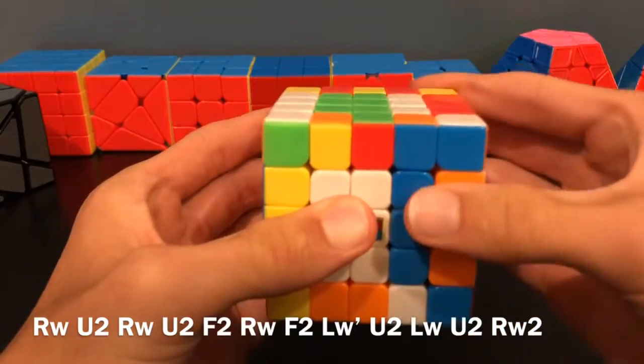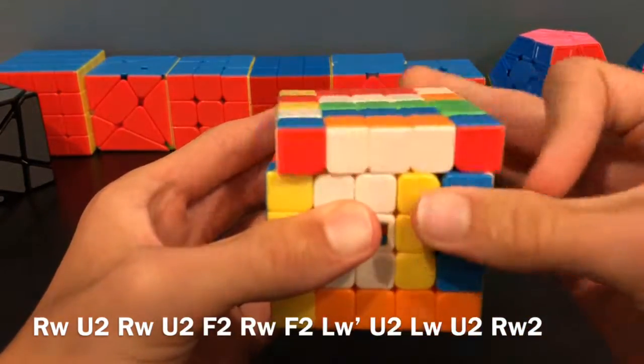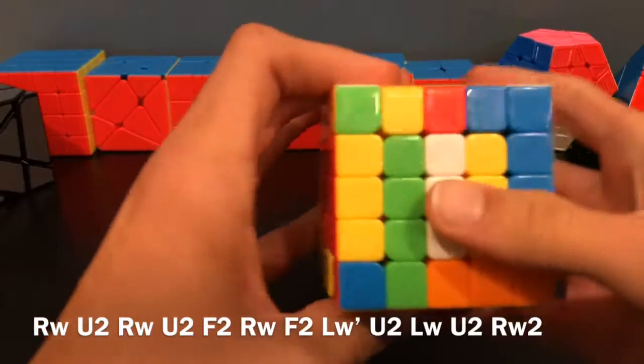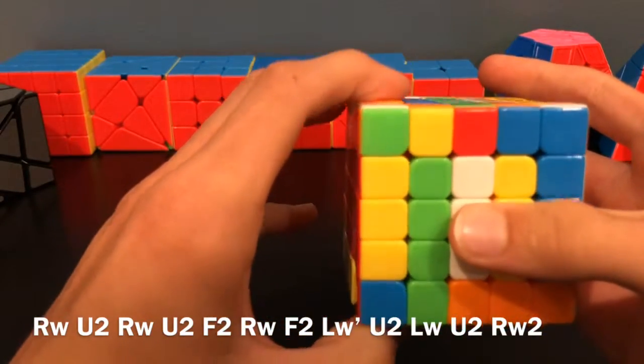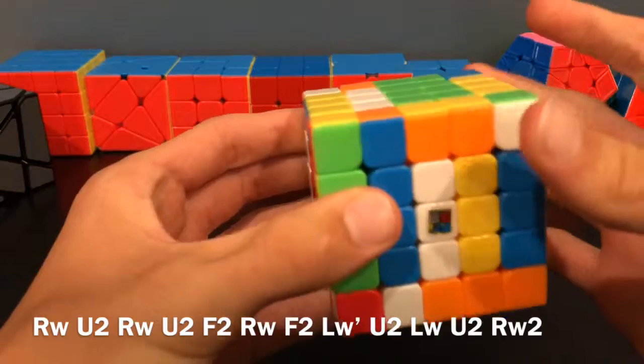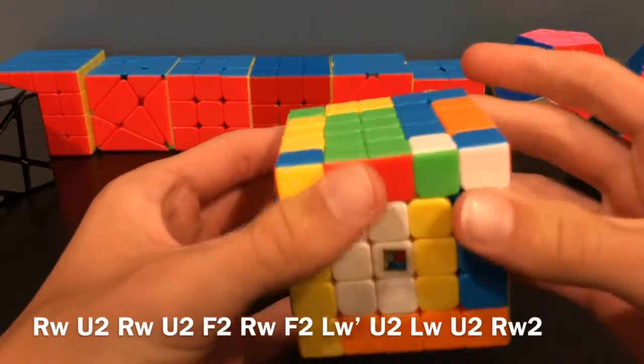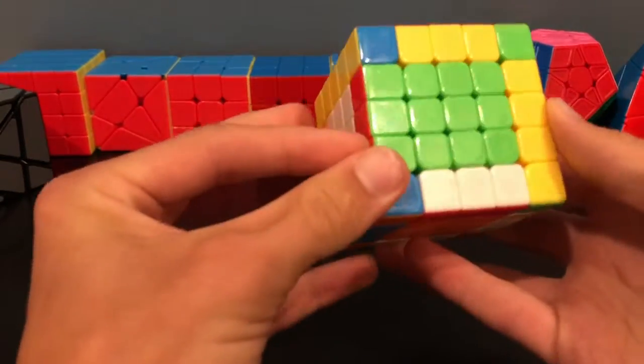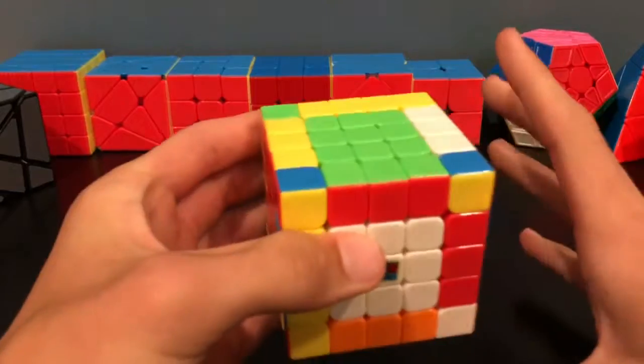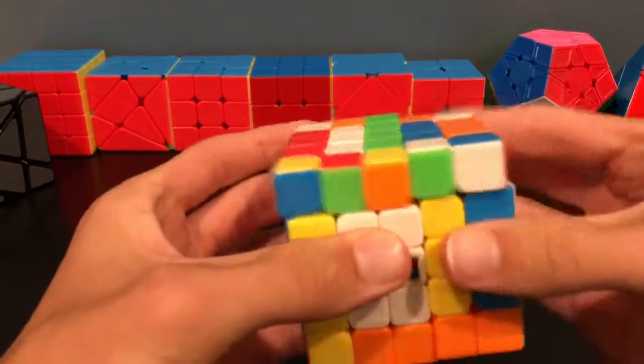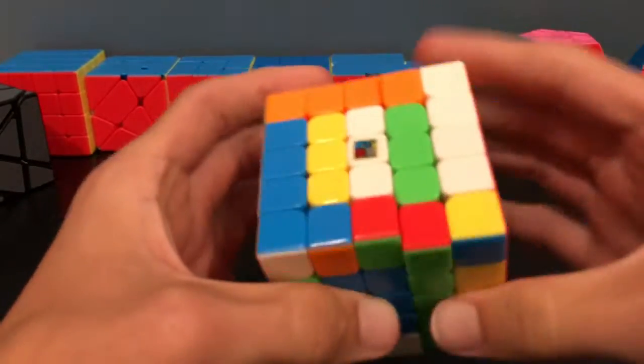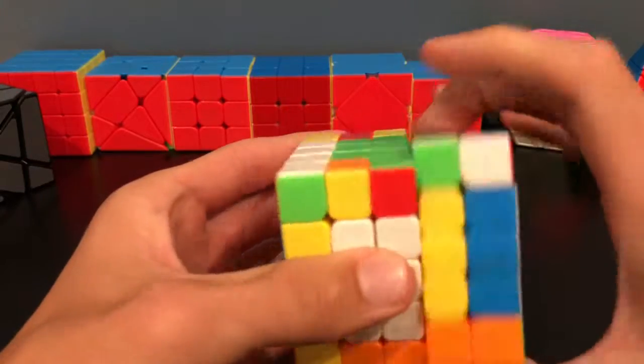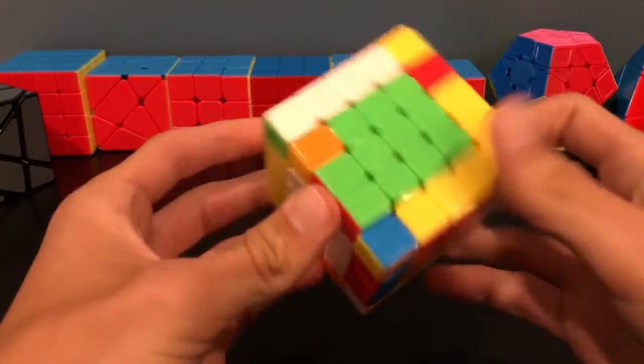R-wide U2, R-wide U2, F2, R-wide F2, L-wide prime U2, L-wide U2, R-wide 2. So now, I've switched those two pieces, and now I can go on to the 3x3 stage. So in review, I did the same two moves, and I did F2, R-wide F2, then up U2, down U2, and then these two. So there you go, that's that case.